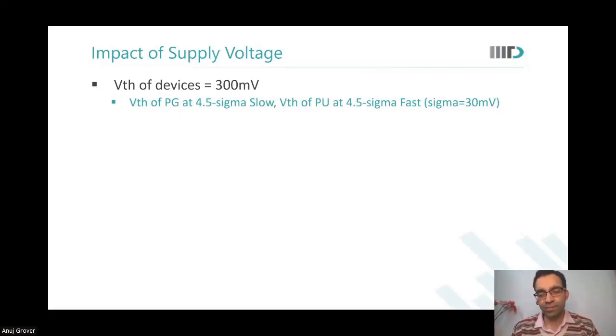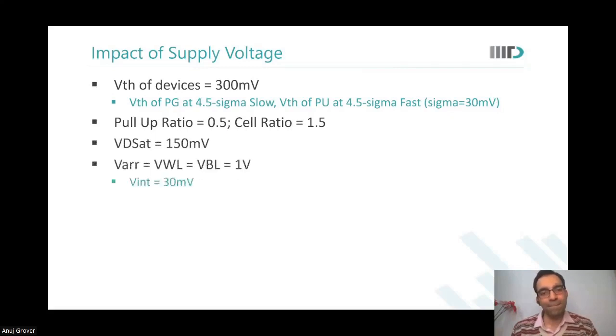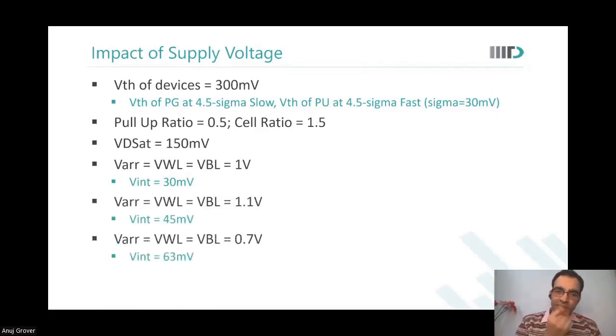Sir, if I'm lowering the supply, then the pull-up is becoming weak, sir. And if my pull-up becomes weak, then my writeability of zero will improve. So if I reduce the supply voltage, you will see it degrades because my pass gate now also seems lesser current.